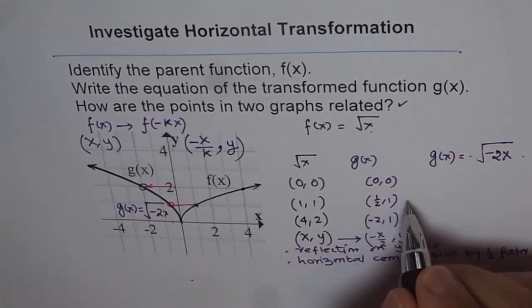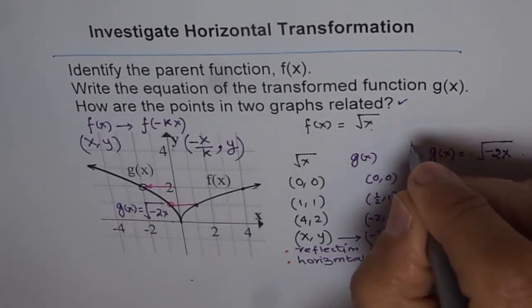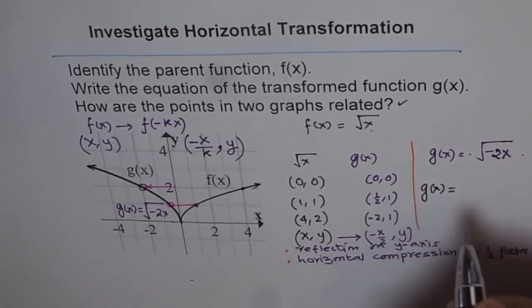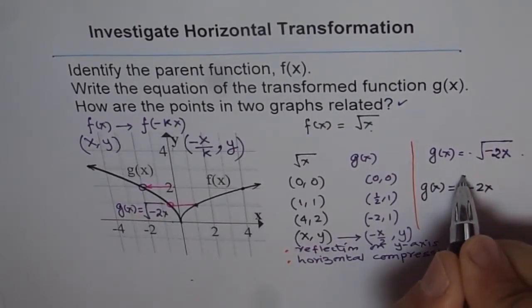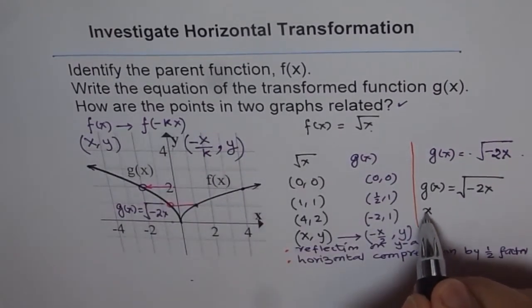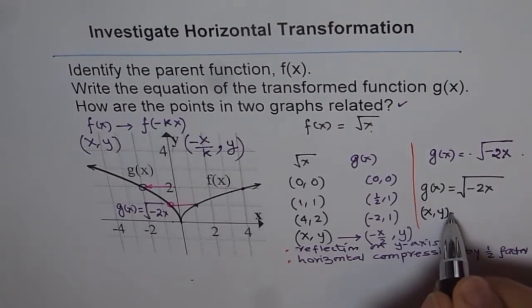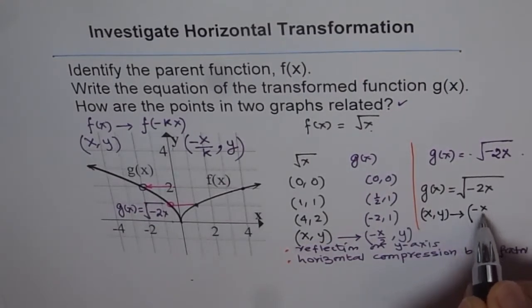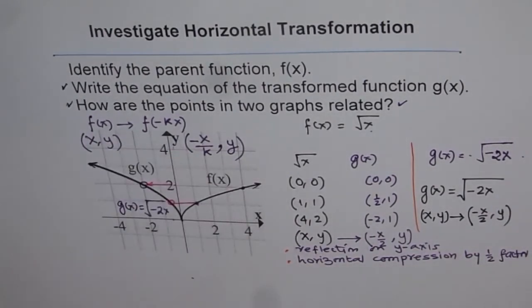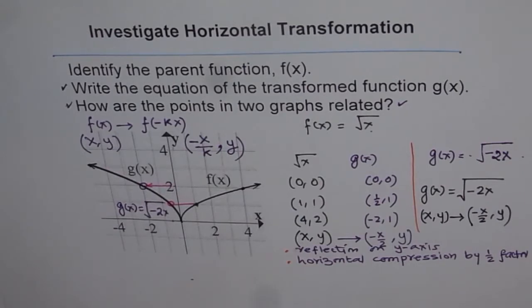So we get our answer that our function g of x is, let me rewrite this answer. So we write this function as g of x equals to square root of minus 2x. And we have two transformations here. One is that it is reflected on y-axis. Second, every x point is compressed horizontally by a factor of half. And how the points are related? Points relation is, if there is a point x and y on the original function f of x, then it gets transformed as minus of x by 2 and y. So that is how the points are related. So these are the two answers for the given question. I hope that makes things very easy to understand now. And let's move on with some more examples with dealing with horizontal twos.